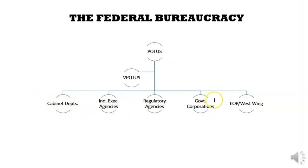There are five parts of the bureaucracy. For the cabinet departments, there are 15. For independent executives, there are tens of agencies. For regulatory agencies, there are literally hundreds. There are tens of government corporations, and then there are hundreds of people that work in the West Wing.